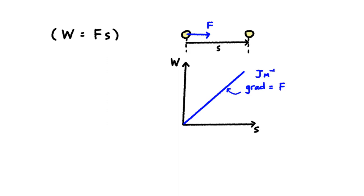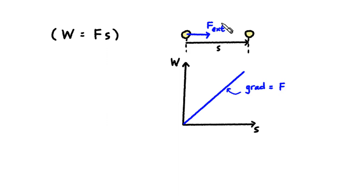Joules per meter is a kind of force. Now, if it's potential energy that we're talking about, then we're always talking about an external force that's doing positive work to increase the potential energy. And the external force is always trying to overcome some hidden force, what we call the field force.